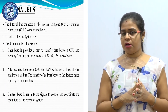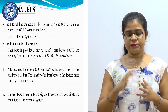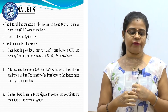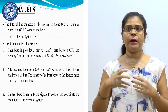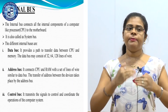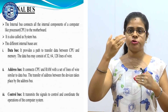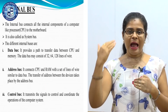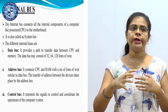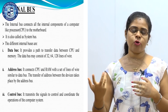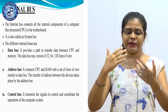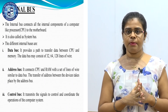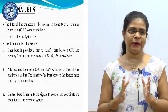The third type of internal bus is the control bus. The control bus is used to coordinate the operations of the computer system. Data passes from the input unit to the CPU, then gets stored in the memory unit, and results are obtained through the output unit. All these activities are under the control of the control bus.